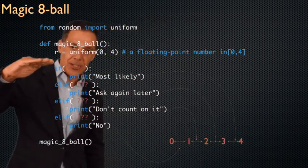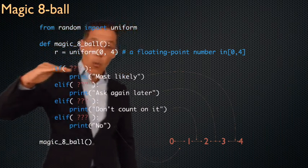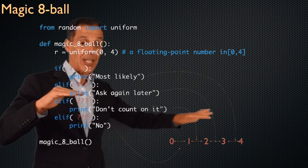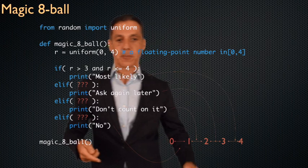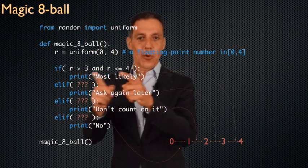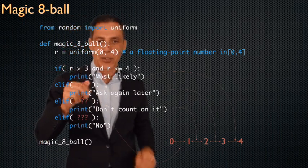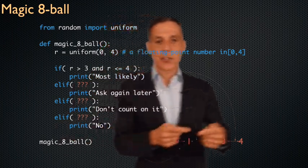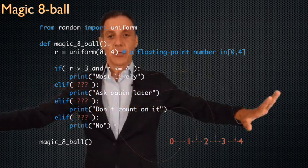If the number is between three and four, respond 'most likely.' If between two and three, 'ask again later.' Between one and two, 'don't count on it.' Between zero and one, respond 'no.' I've built an if-elif ladder with the conditionals left blank to fill in. One and only one of these can be evaluated — once a condition is true and you execute that body, you're out of the ladder. Now let's think through these conditionals: if r is greater than three and less than or equal to four, print 'most likely', and we're done with the if-elif ladder.